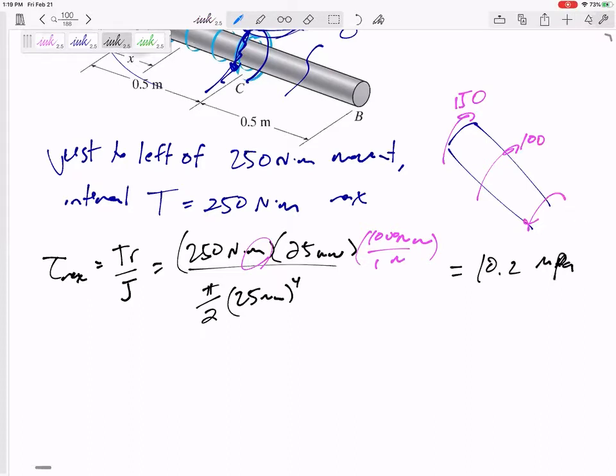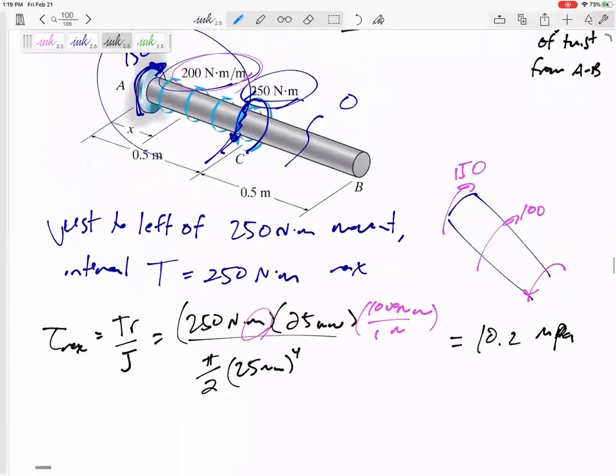And it might be helpful to kind of compare that and just make sure, does that get into the yielding region? Because my next step, calculating the angle of twist is only true for the elastic region. That's less than the yield stress, so we are in the elastic region. So that was part A. That is the absolute maximum stress. Where does it occur? It occurs on the outside edge, right about where that 250 Newton meter torque is applied.